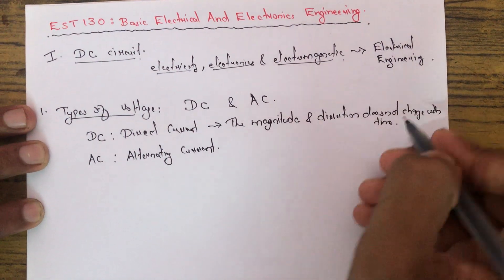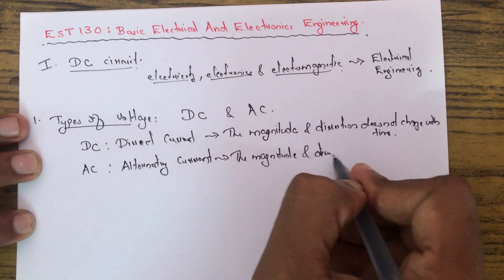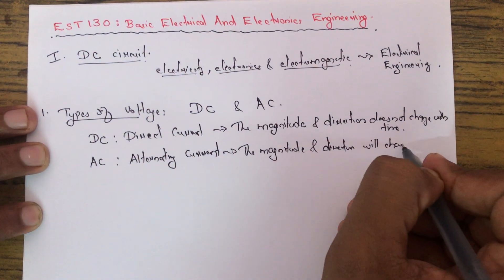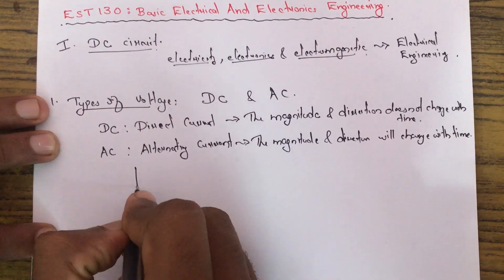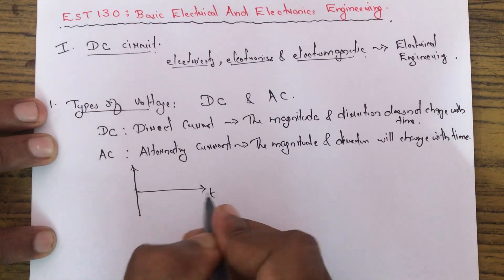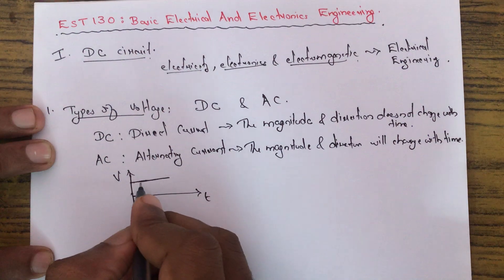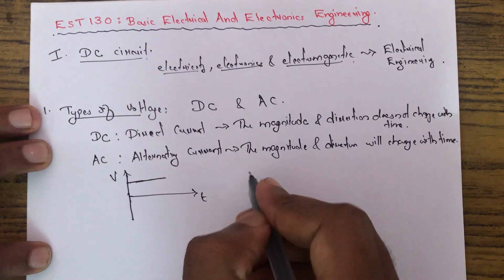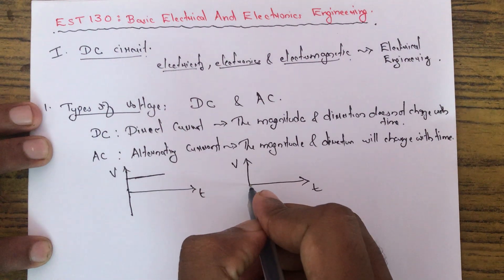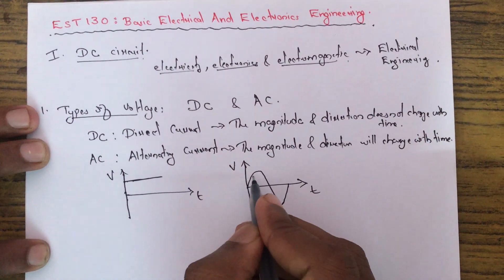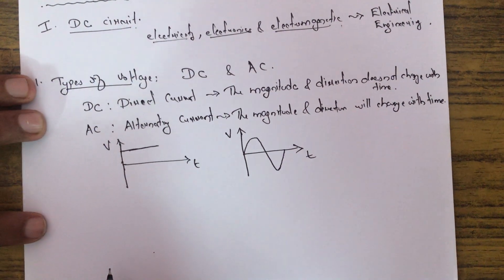In AC, the magnitude and direction will change with time. If we plot a graph of voltage across time, the DC voltage curve shows constant magnitude and direction, while the AC voltage curve shows alternating values — the magnitude as well as the direction change with respect to time.